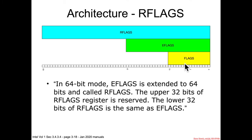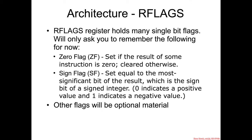The flags register originally existed back in the 8086, was extended for 32-bit, and extended again for 64-bit, but as it says, it's all zeros so there's no actual purpose to the extra bits. The rflags register holds many different single-bit flags, and for right now I only want you to focus on two of them. There's the zero flag: if the result of some operation is zero, the zero flag will be set to 1 — so zero flag is 1 if the result is 0.